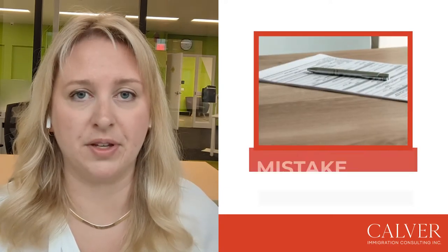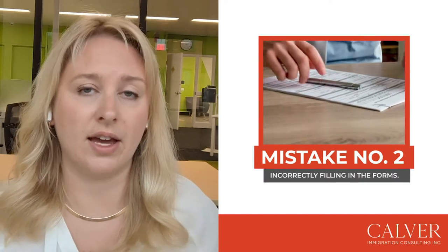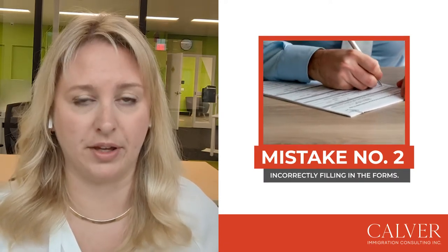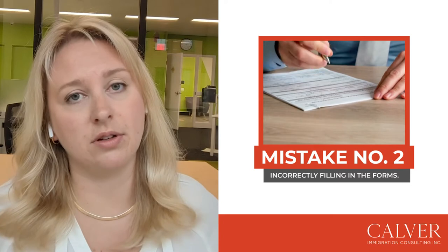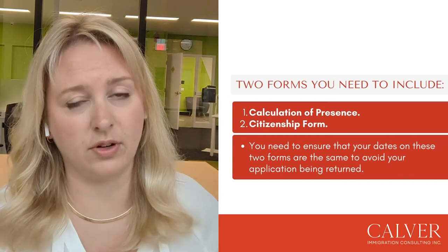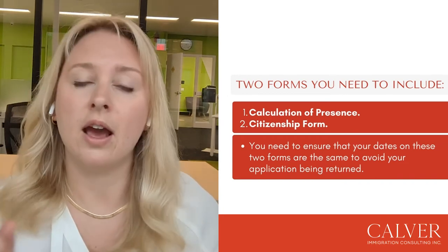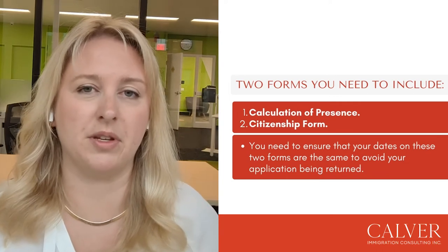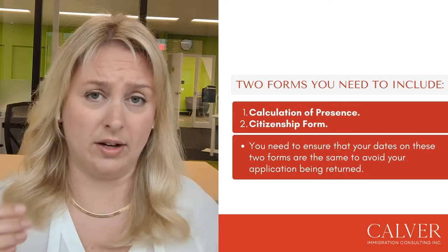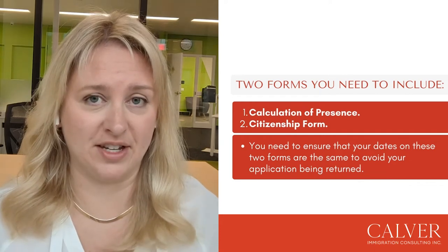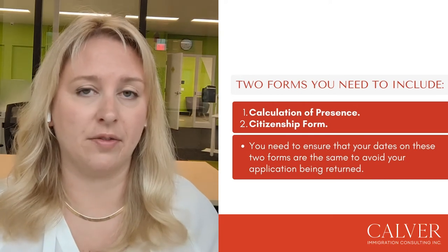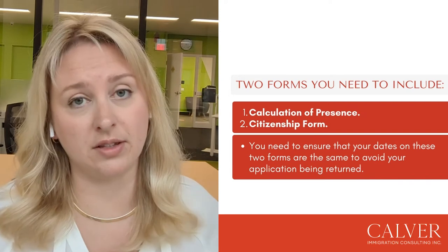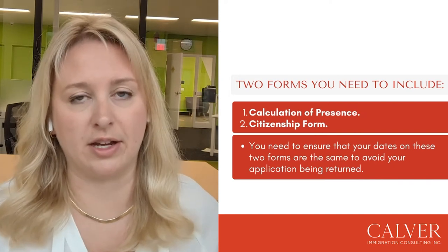Another big issue we see is clients not filling the application forms properly. The application form can now be validated, and clients also need to include a second presence calculation. There are actually two forms that need to go in with the citizenship application and all of the dates need to align. For example, if in the presence calculator you say you're filing on May 5th, but in the citizenship form it says May 1st, IRCC will actually send back your application.